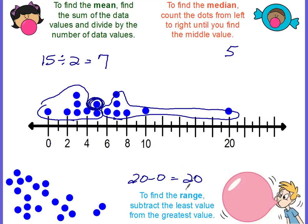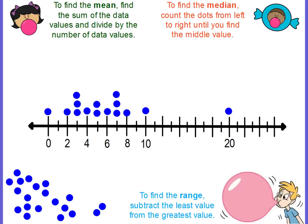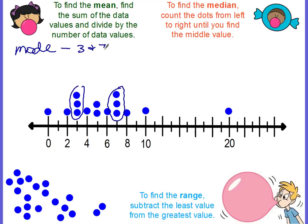So the range is twenty. And there's one other thing — the mode. Which one appears the most? That's going to be the one that has the most dots. You can see that three has three dots and seven also has three dots. So there are two modes: three and seven.